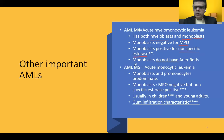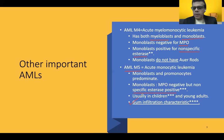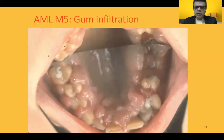AML M5 is acute monocytic leukemia, where the sole element seen is the monocytic element — myelocytic elements are very scanty. Monoblasts and promonocytes predominate, with positivity for nonspecific esterase. The important feature commonly asked is gum infiltration: monoblasts infiltrate the gums, leading to profuse gum bleeding and sometimes a tumor mass in the gum.